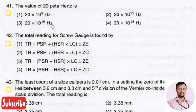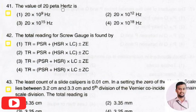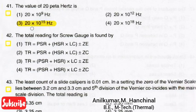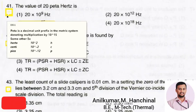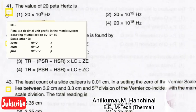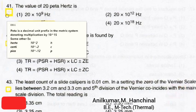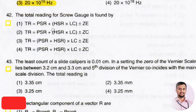The first question in the Applied Science section: the value of 20 petahertz. The right answer is option 3, that is 20 × 10¹⁵ hertz. Peta is a decimal unit prefix in the metric system denoting a multiple of 10¹⁵. So 20 peta means 20 × 10¹⁵ hertz.